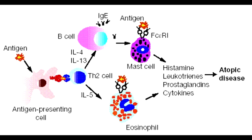What is Type 1 Hypersensitivity Reaction? Type 1 Hypersensitivity Reaction is an allergic reaction provoked by re-exposure to a specific type of antigen, referred to as an allergen. This type of allergic reaction is considered to be anaphylactic and atopic.